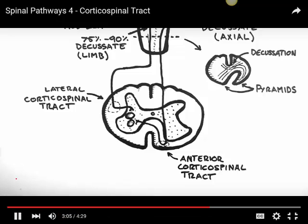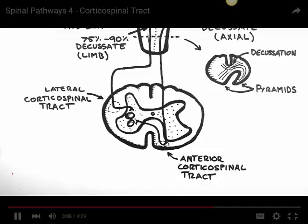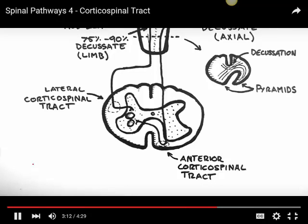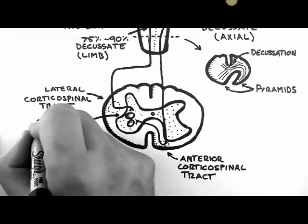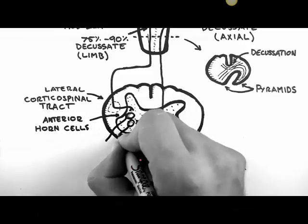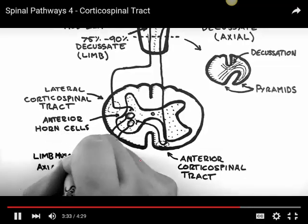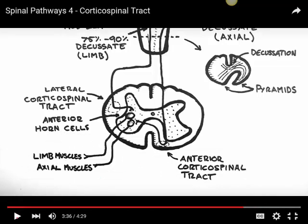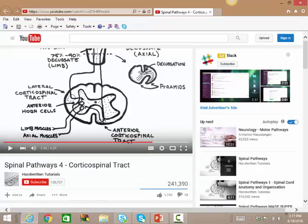Neurons in the cortex are known as upper motor neurons, and a lesion anywhere along these fibers — from the cortex all the way down to the anterior horn — is called an upper motor neuron lesion. The neurons in the anterior horn, called anterior horn cells, then project to the limb and axial muscles. They come out through the ventral root and go to the muscles in the limbs or in the axial regions.